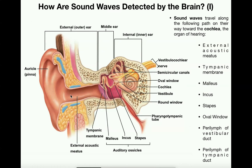Those sound waves move through the external acoustic meatus and the next structure they touch is the tympanic membrane — the second structure in the sequence. The tympanic membrane's common name is the eardrum. On one side of it is the external acoustic meatus, and on the other side are directly connected bones.